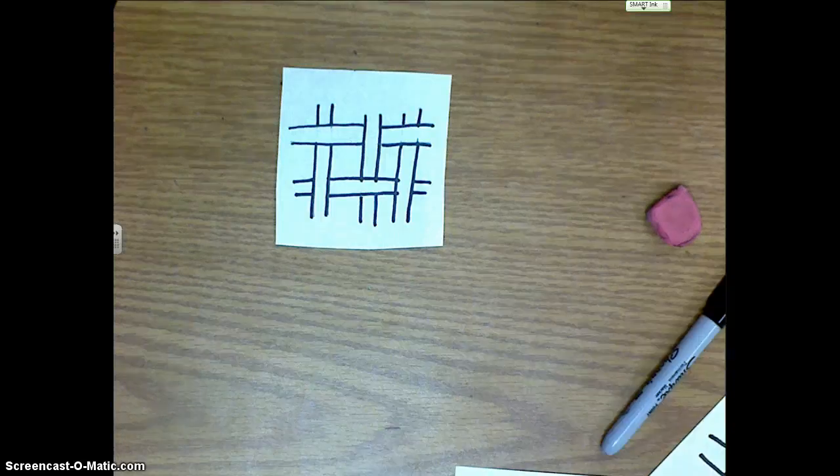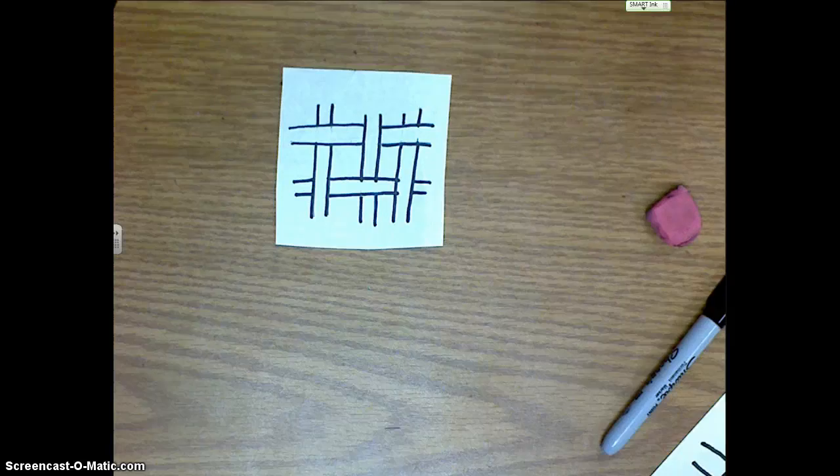Today we learned how to make a Celtic knot. Our I-can statement was, I can identify characteristics of international artistic styles, movements, and genres in art. Thank you.